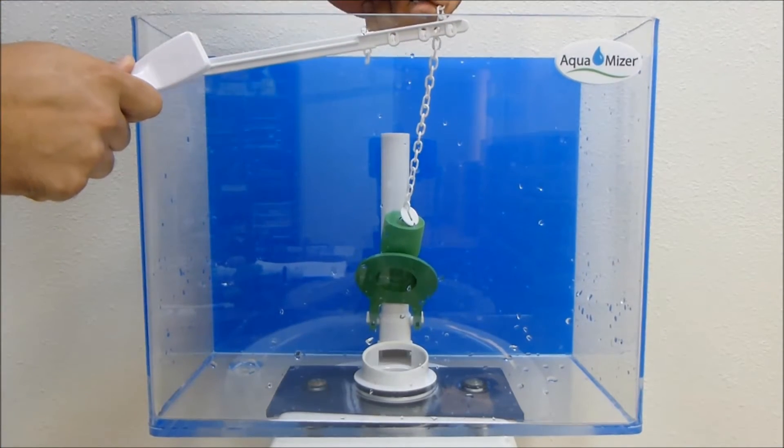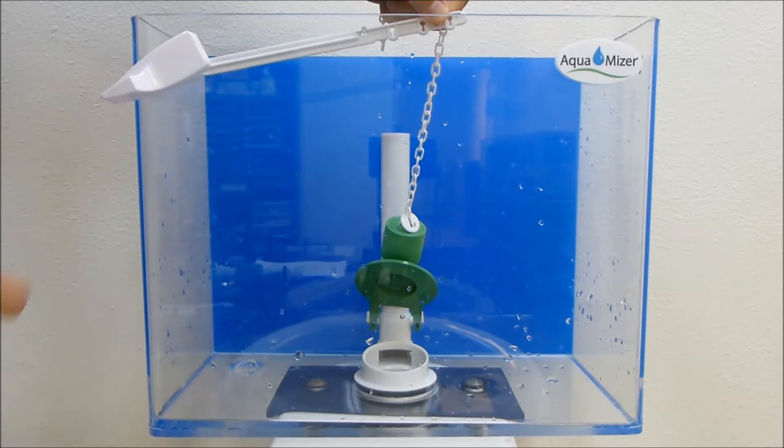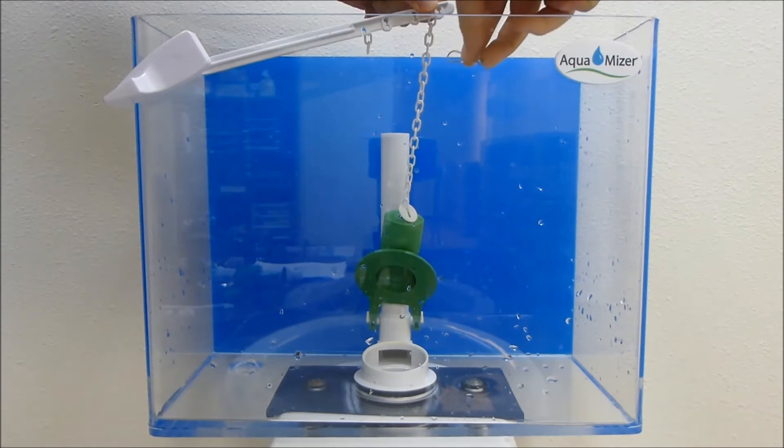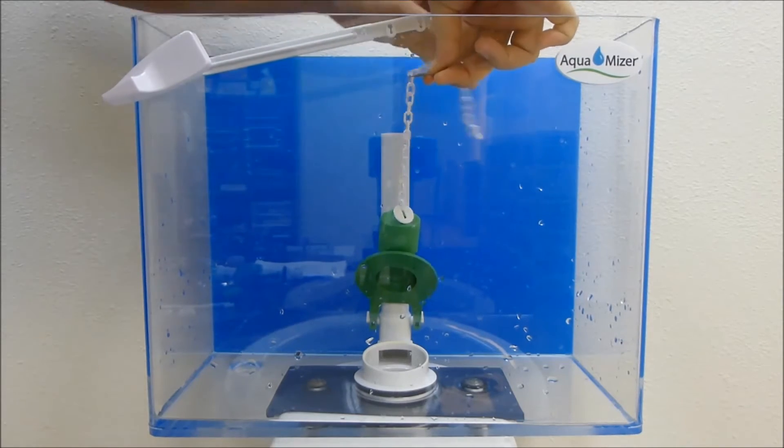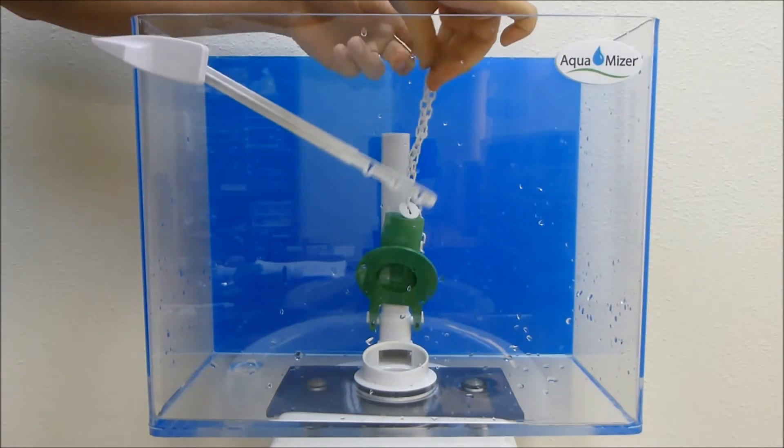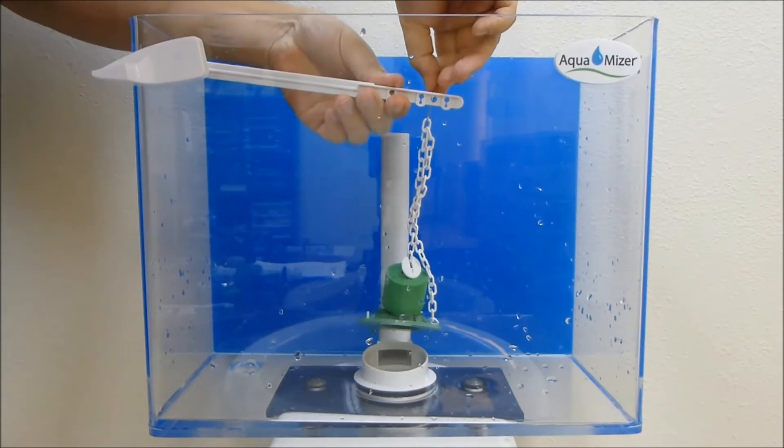While the flush handle is pressed down, pull up on the chain until the flapper is opened as high as possible. Move the chain to the closest hole directly above on the flush handle and connect the metal clip about six chain links down from this hole. Finally, attach the metal clip onto the flush handle.